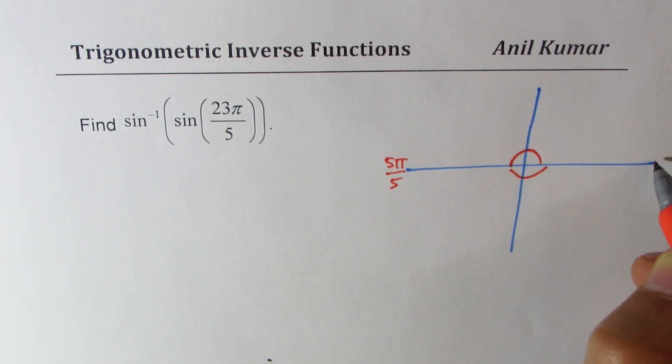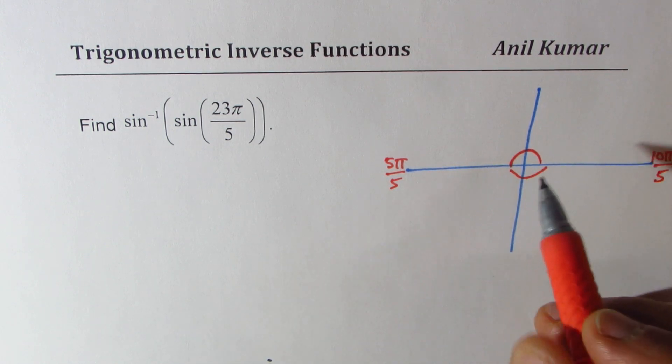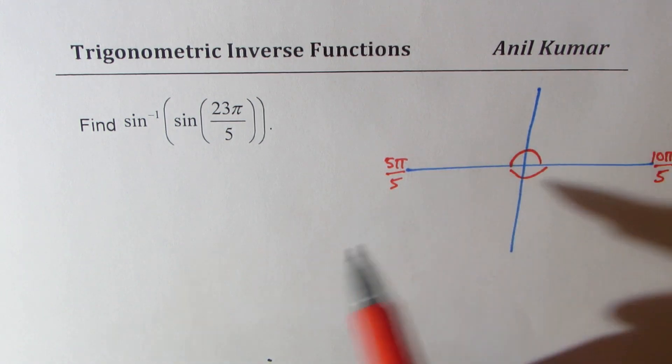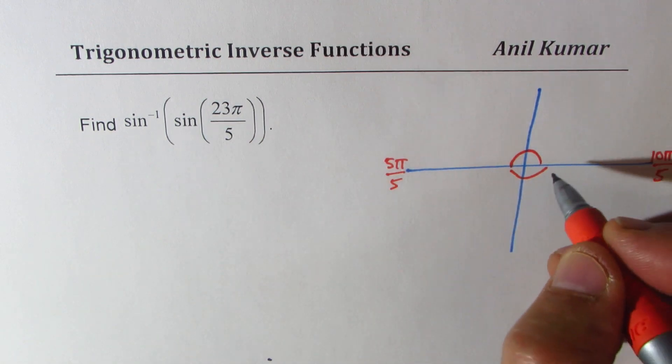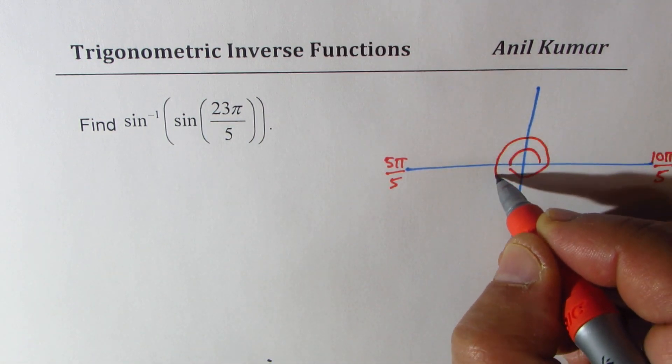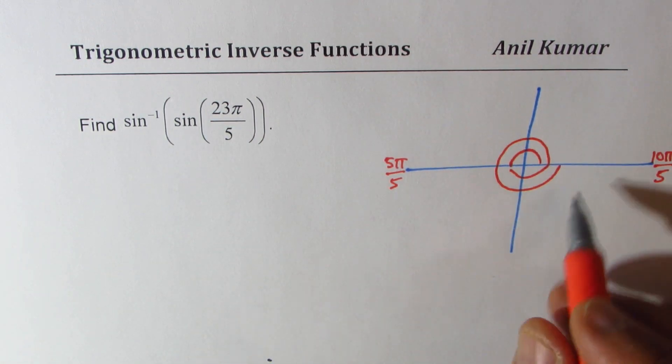So if you move further, it becomes 10π by 5. So that is 10. Then, when it is 23, so you have to go one more circle, it becomes 20.